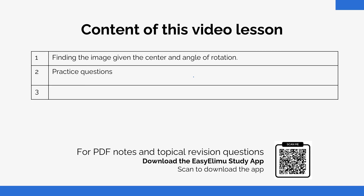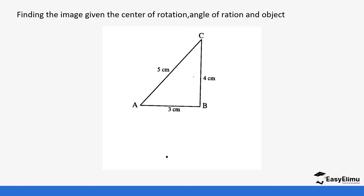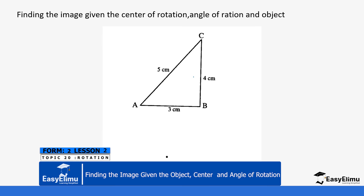In our previous lesson we had the image and the object but we didn't have the center of rotation nor the angle of rotation. Today we are swapping things a bit. You are given the object, the center, and the angle of rotation. What we are discussing today is not on the Cartesian plane — we will discuss the Cartesian plane version later. So we are finding the image of the following triangle given the center and angle of rotation.